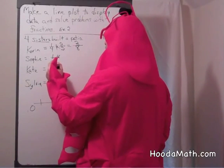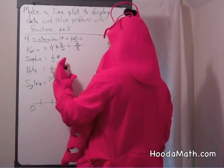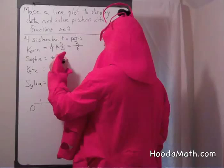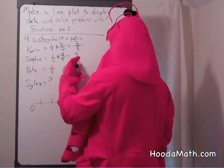Sophie will have to change from one half to, would you have to multiply two by to get eight? Four. So we have to multiply by four over four. Four times one is four. Two times four is eight.